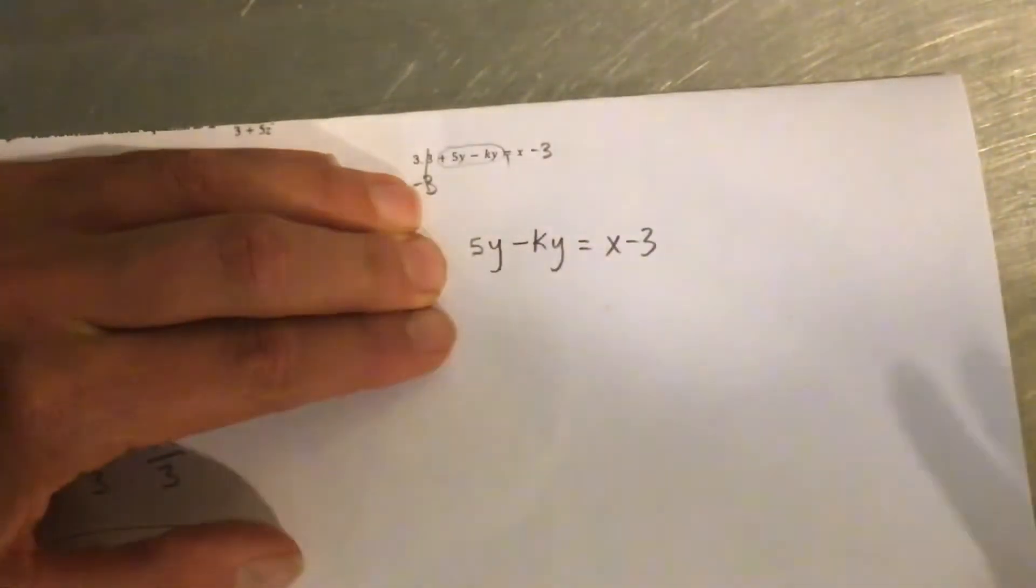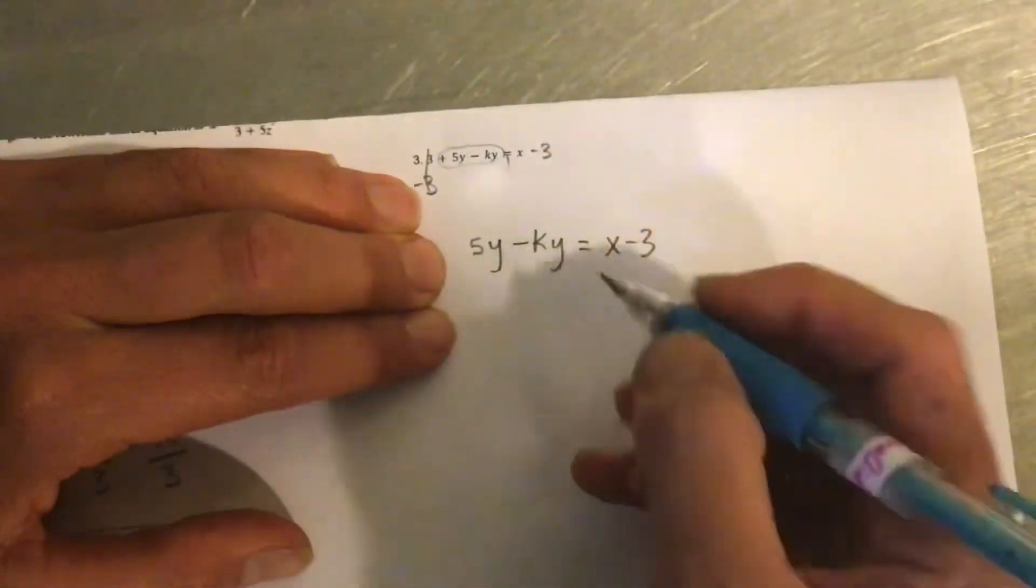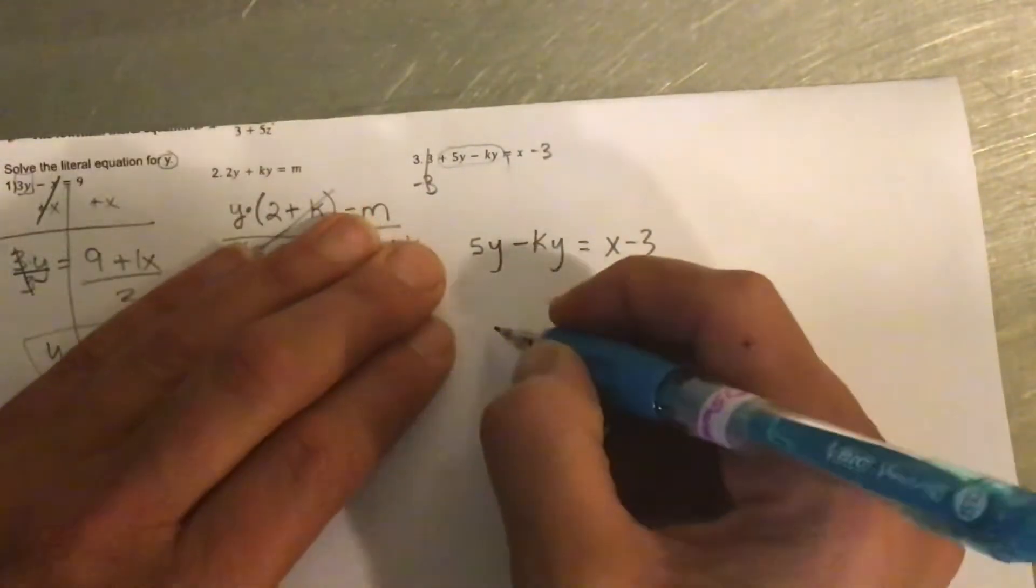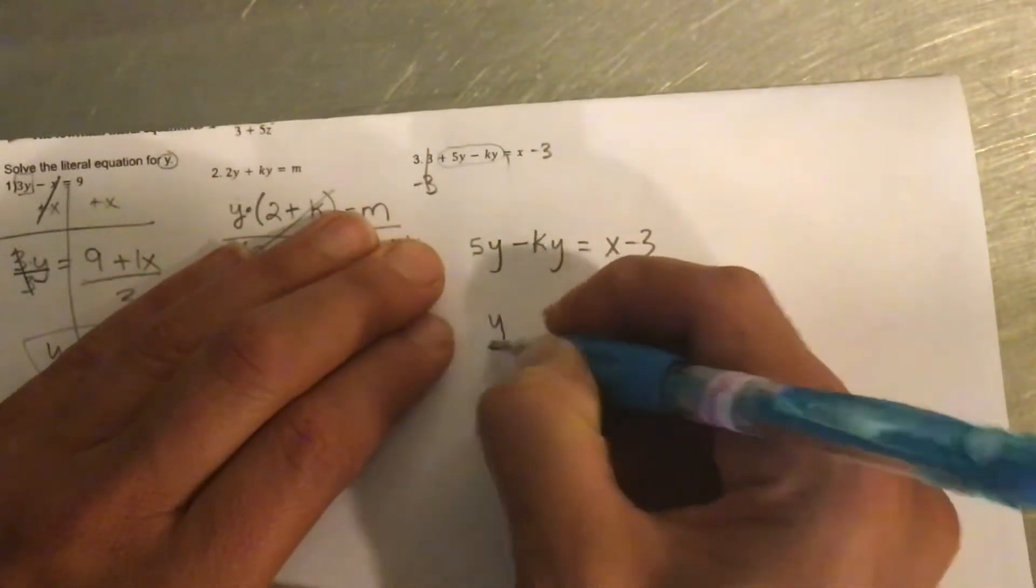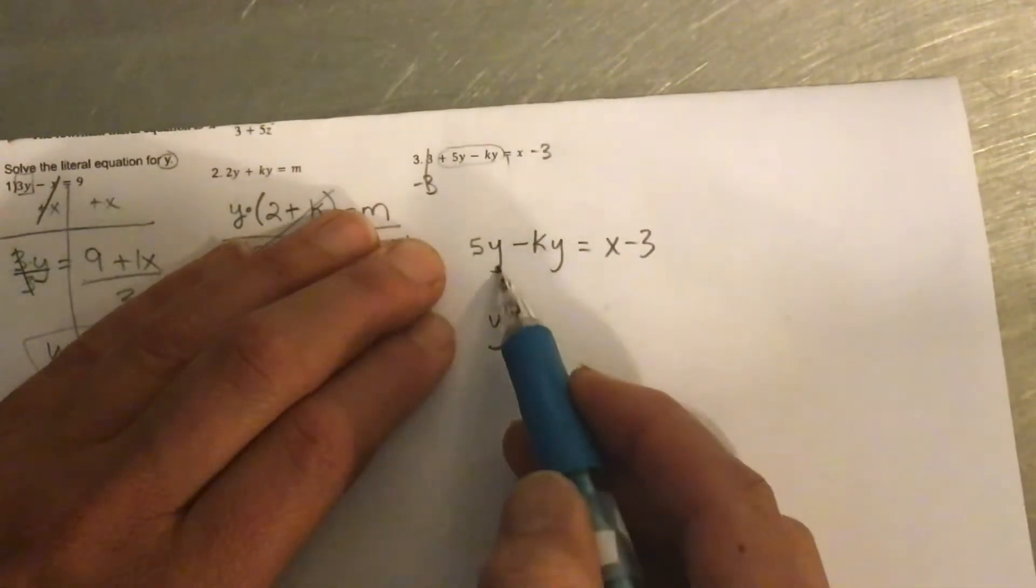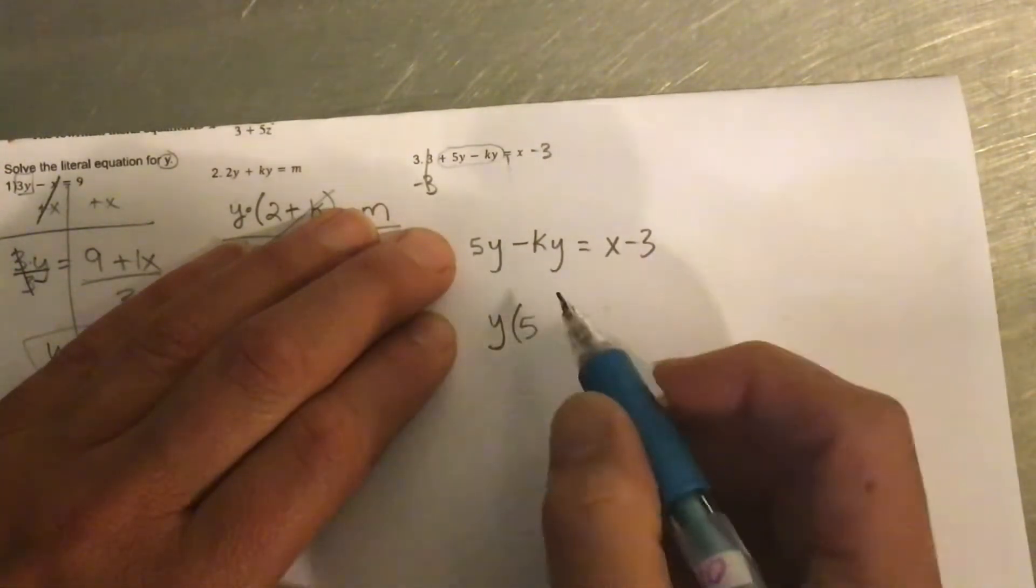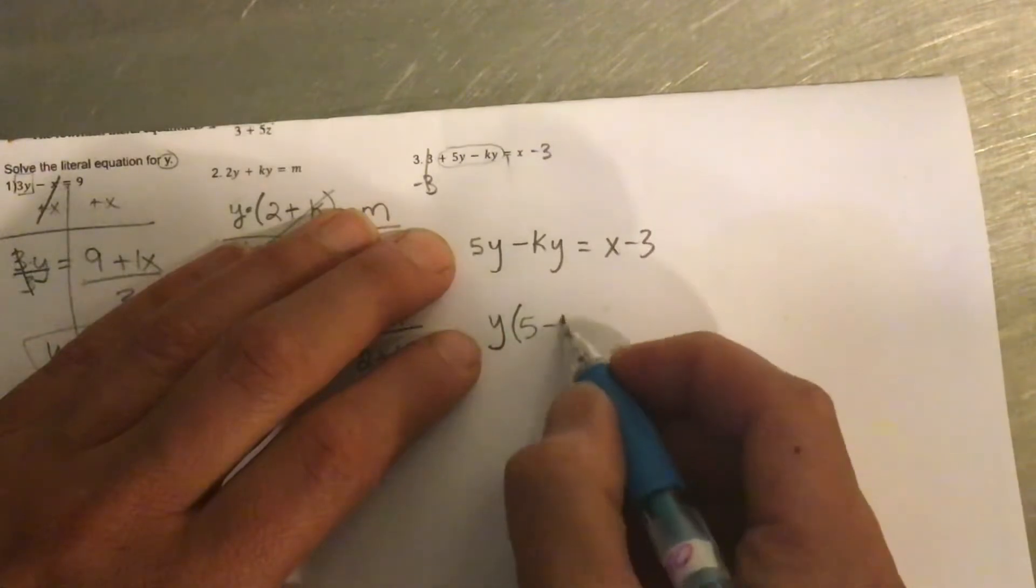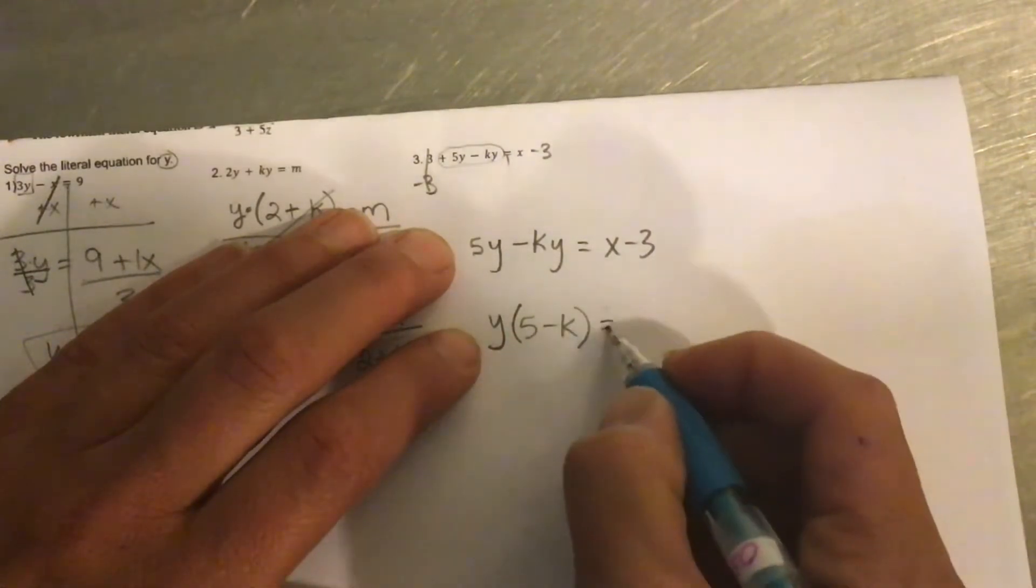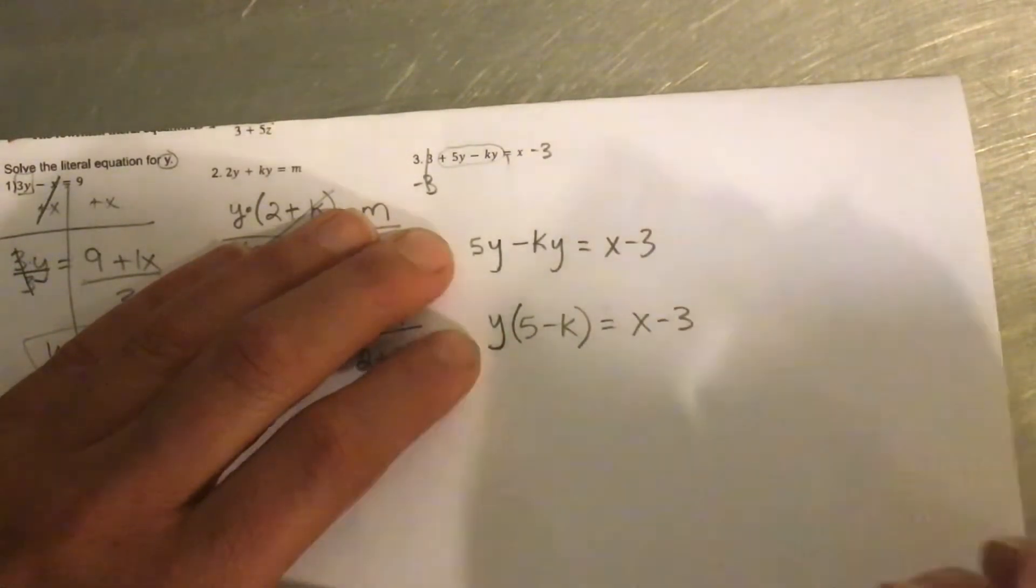So now I have two terms, only two terms, with the same variable that I want to single out, that I want to solve for. And so I want to do the distributive property. So if I take a y out, that's 5 left. And if I take a y out, it's negative k is left. Equals x minus 3.